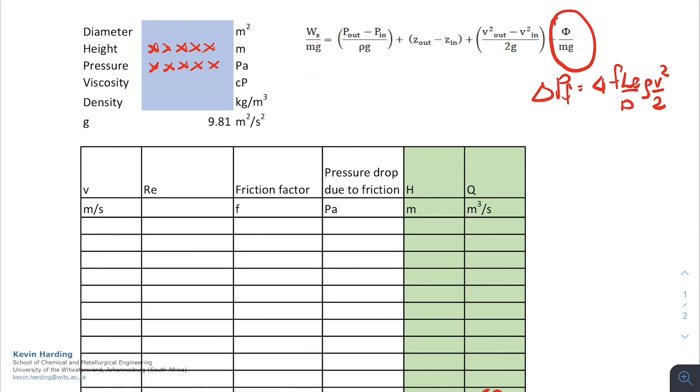We have this Ws term on the left, so H equals a pressure term plus the Z term plus, this will often fall away to zero, plus a delta PF term. Please remember this is not in the right units at the moment, but here we have our velocity term. So we've now got the right equation such that we can plot it. The trick now is to get this delta PF into the correct form.